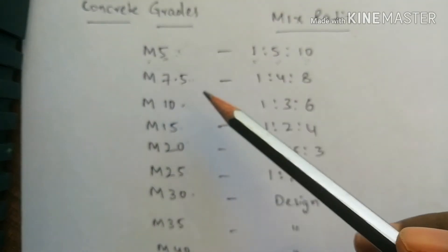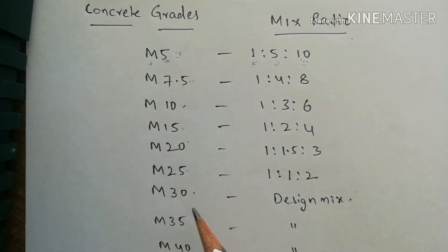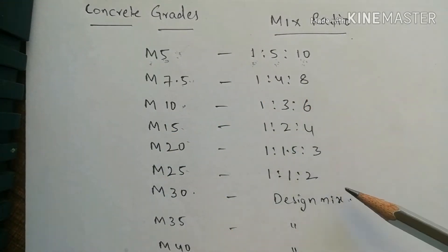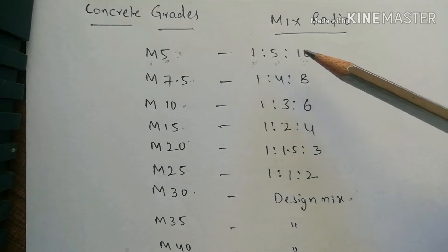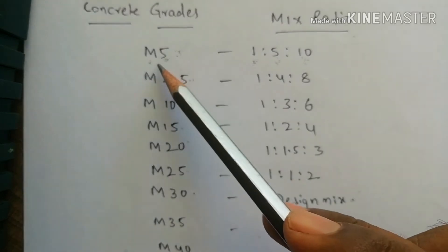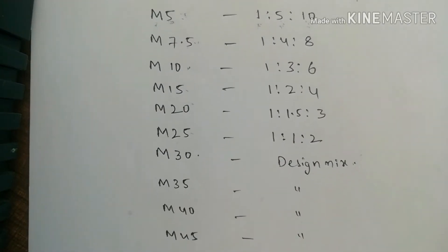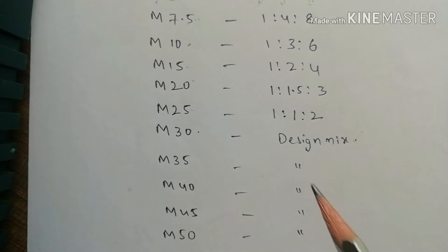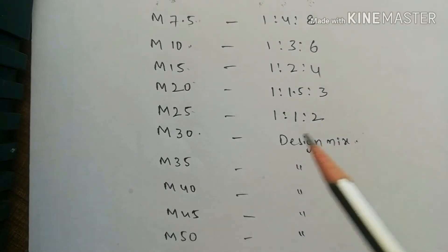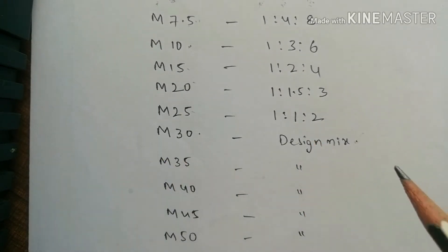M7.5 also has a mix ratio. Up to M25, this is a nominal mix — for example, 3:10 ratio. From M30 onwards, it is not a nominal proportion; M30 is a design mix ratio.